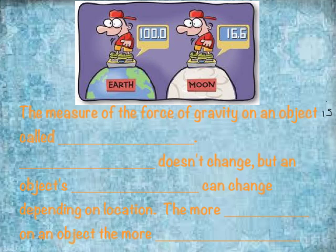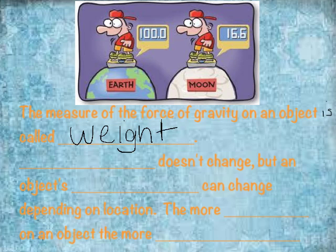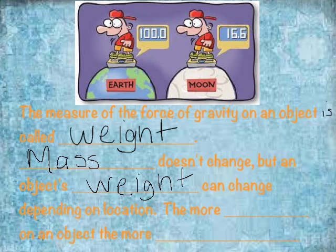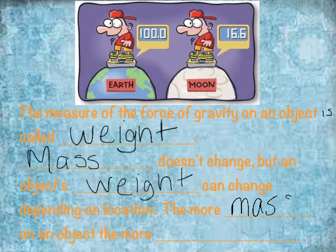Mass is the amount of stuff in an object and it's not going to change when you go from place to place. But when you add the force to it, something else is changing. The measure of the force of gravity on an object is called weight. The mass never changes, but an object's weight can change depending on its location. This guy weighs 100 pounds on Earth, while this guy on the Moon weighs 16.6 pounds. His mass isn't changing — what's changing is the Earth's mass versus the Moon's mass.